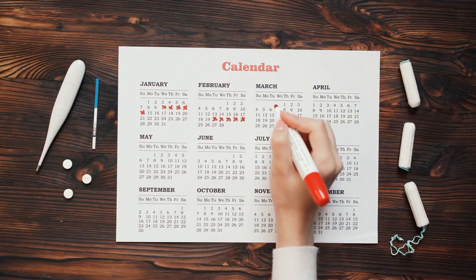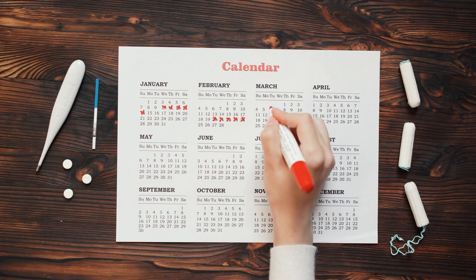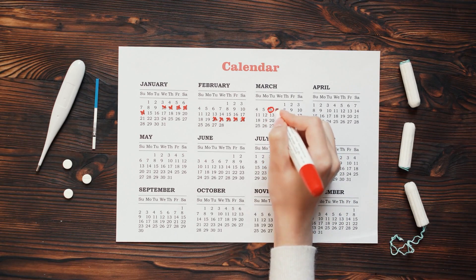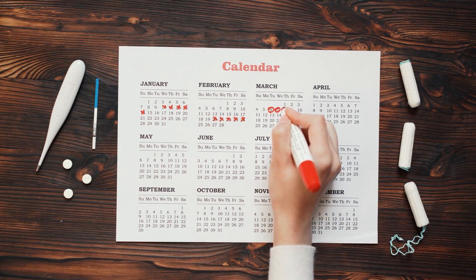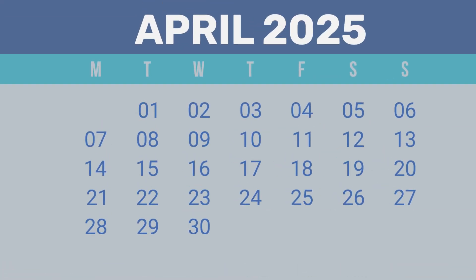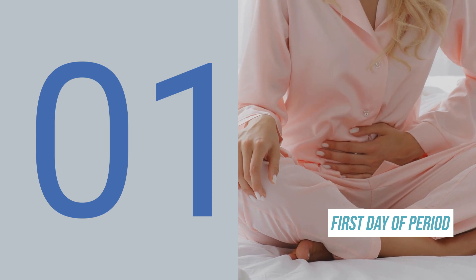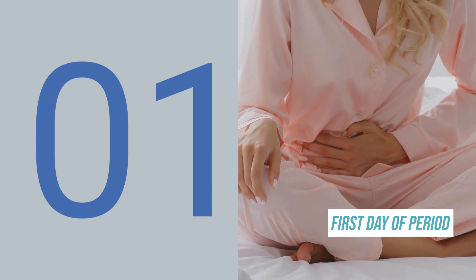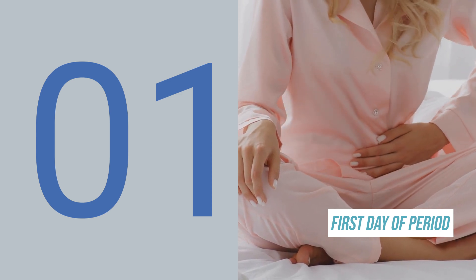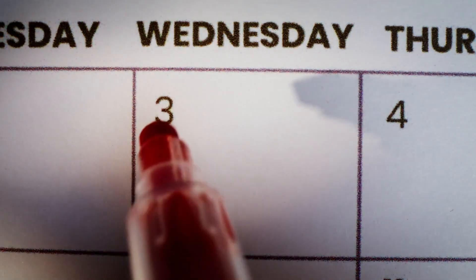Day one of your period is the first day that you have any vaginal bleeding. On average, most people bleed for about five days. It's easiest to track this on a calendar, so we're going to use April as an example. If you started bleeding on April 1st, that was day one of your period.